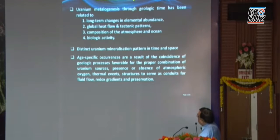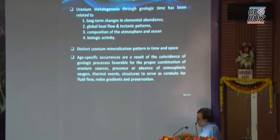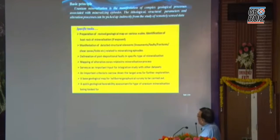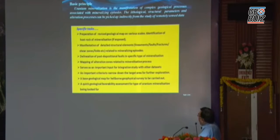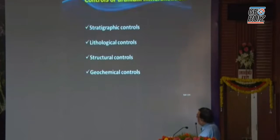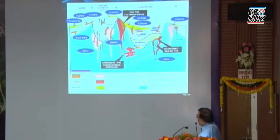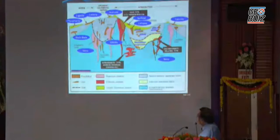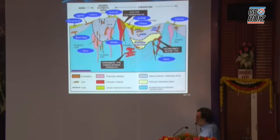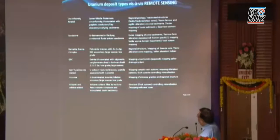As far as uranium exploration is concerned, geologically it has a distinct period where uranium mineralization has taken place. Those geological time periods are very important — when those tectonic processes precipitated the uranium. A quick geological favorability assessment for the type of uranium mineralization is the major theme for which we use satellite data. Broadly, the four controls are stratigraphic, lithological, structural, and geochemical. These are the different types of uranium deposits present in nature, and all of them have distinct features which can be picked up by satellite data products.